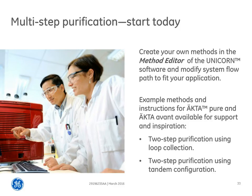To run multi-step purification, you have to create your own methods in Unicorn Method Editor and modify the flow path by adding extra valves to fit your application. To help you get started, there are two cue cards available from GE Healthcare for support and inspiration. These cover two-step purification using loop collection — where eluted peaks from the first chromatography step are stored in loops and then automatically injected onto the next column — and two-step purification using tandem configuration, where the eluted peak is directly transferred onto the next column.